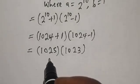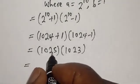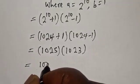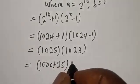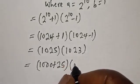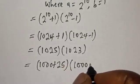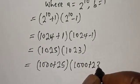Now let's see. 1025 can be written as 1000 plus 25, and 1023 can be written as 1000 plus 23.